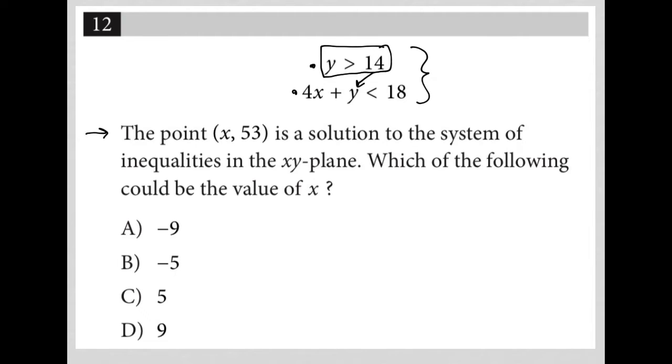The question itself says the point x comma 53, that's interesting. If I have a point as a solution, I know that this is telling me that y is 53. And that's probably all that I need.